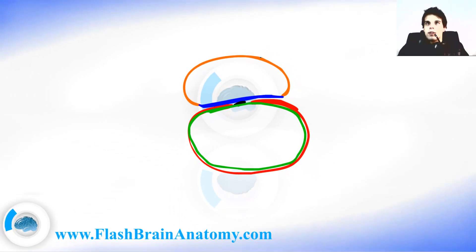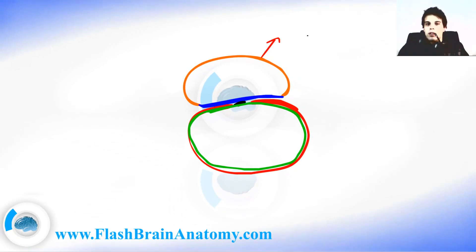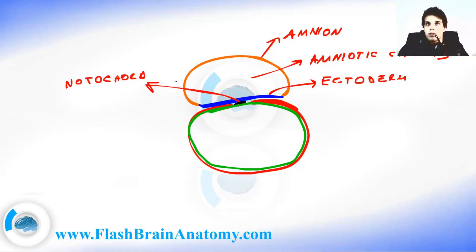Let me just write this all down. This was the amnion. This was the amniotic cavity. This blue thing was ectoderm. This dark thing in the center was the notochord. This was the mesoderm and this over here inside was the endoderm.